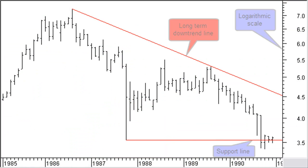Can we make a profit on trend line breaks using a long term monthly chart? Let's find out. We are December 28, 1990, looking at the long term monthly logarithmic chart of a bank stock. Price is down more than 50% and has broken a long term support line. It is clear that for the moment we have no confidence in this stock and we are only prepared to buy it when the long term downtrend line is broken by a monthly closing price.